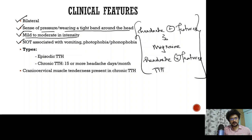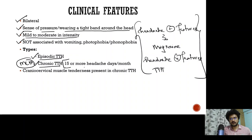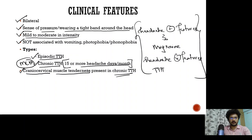Coming to the types: we have episodic tension type headache and chronic tension type headache. An important MCQ — chronic tension type headache is when the patient has 15 or more headache days per month. In patients with chronic tension type headache, they are also going to have cranioservical muscle tenderness.